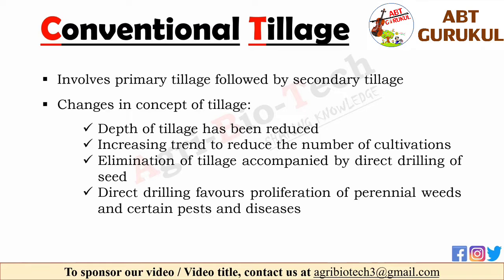Due to various reasons, the concept of tillage has undergone radical changes. The depth of tillage has been reduced and the cultivator has replaced the plow as a primary tillage implement, particularly on heavy soils. There has been an increasing trend to reduce the number of cultivations to avoid undesirable results of over-cultivation. Reduction or elimination of tillage has been accompanied by direct drilling of seeds. The main disadvantage is that direct drilling favors the proliferation of perennial weeds and certain pests and diseases.